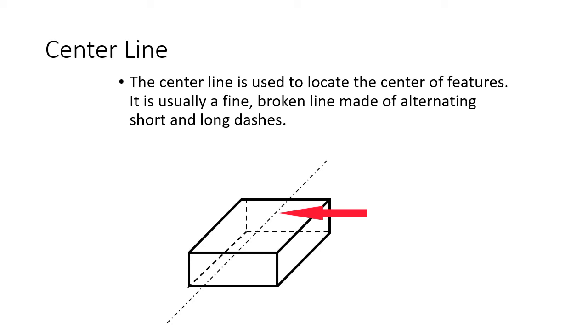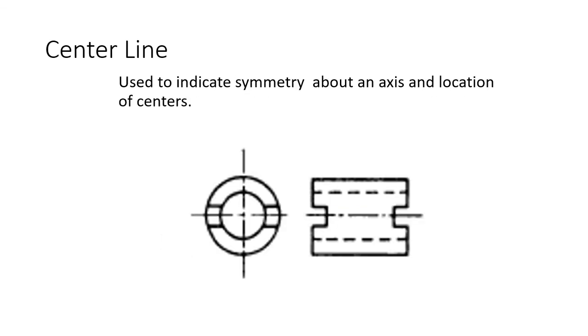Here's another center line example used to indicate symmetry about an axis and location of center. If you got a line like a bullseye basically going through a circle, that's telling you where the center of your circle needs to be. Because if you're trying to locate a circle or a hole and you're using the edge of the hole, it'd get too difficult. So you just use the center of the circle or the hole to denote where you want the center to be. And you can see we've used center lines here to tell us that information.